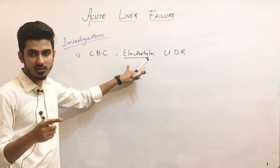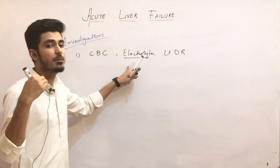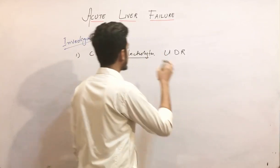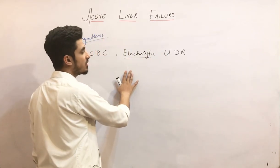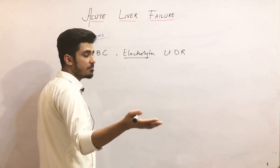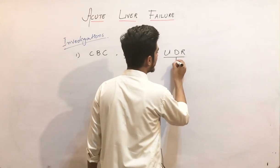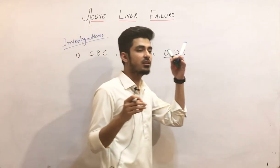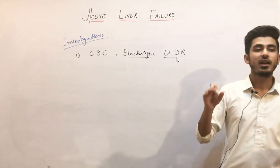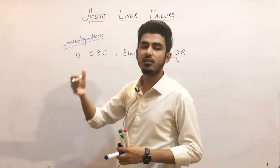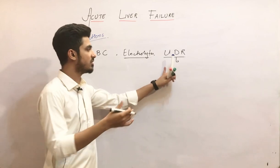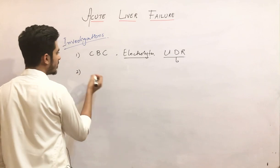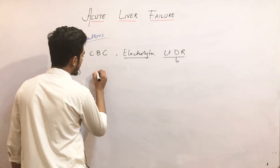Why are we doing electrolytes? Because electrolytes are imbalanced in liver failure. Hypoglycemia, hypophosphatemia, hypocalcemia, and hypomagnesemia occur. For urine DR, you will see if there is any renal problem — whether the liver failure has affected the kidneys or not. You have to rule out kidney dysfunction using the urine report.